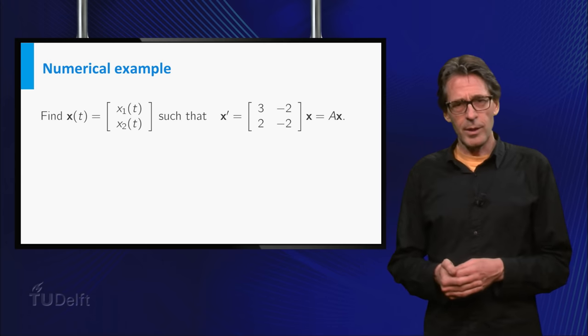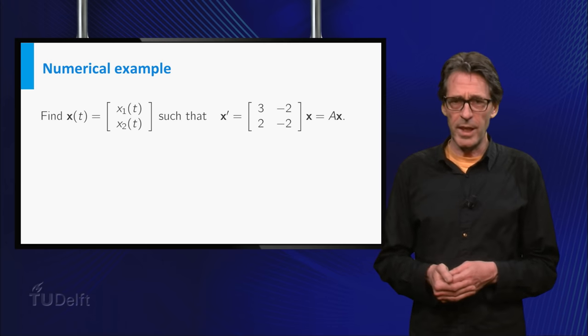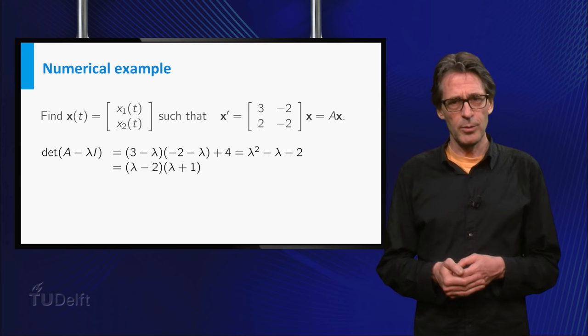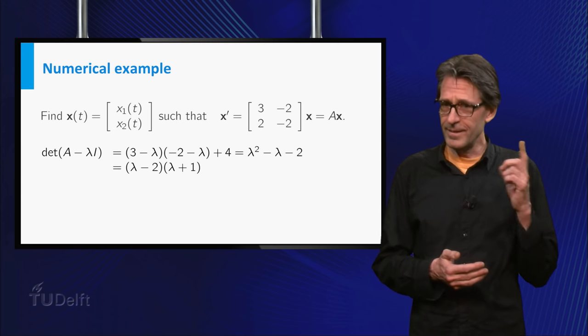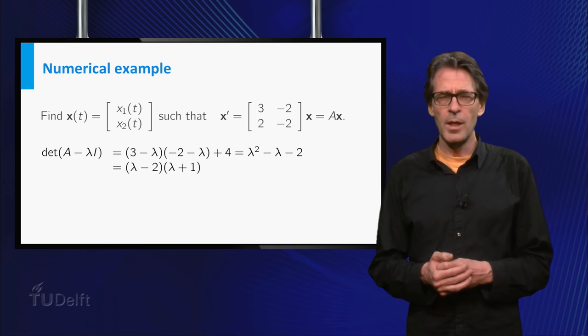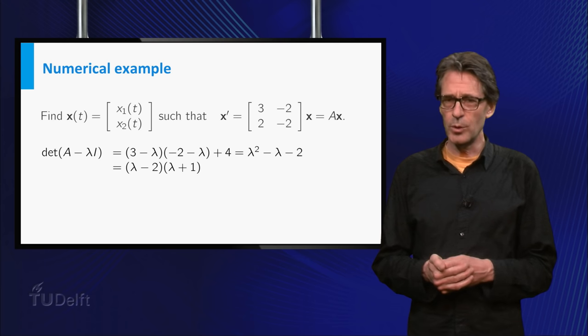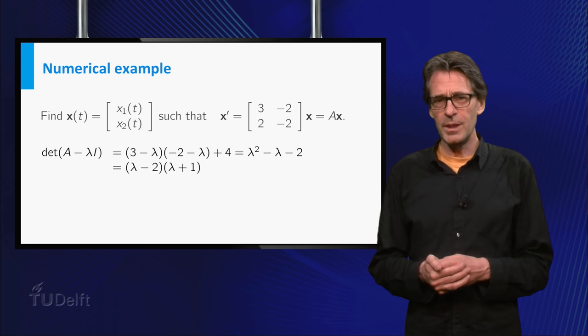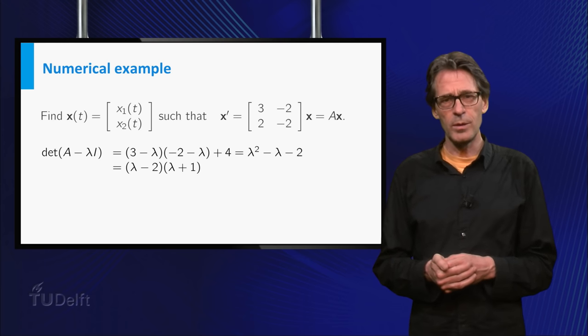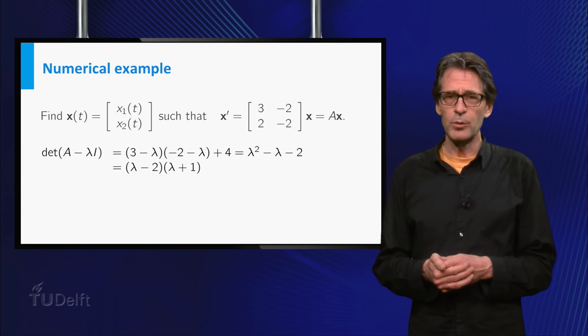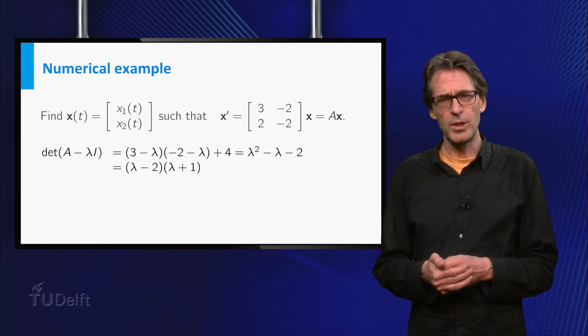Let's apply it to the numerical example. For the matrix A, the eigenvalues are the zeros of the characteristic polynomial. Characteristic A, there is that word again. So λ squared minus λ minus 2 should equal zero. We see that the eigenvalues are λ₁ equals 2 and λ₂ equals minus 1. You should be able to find the corresponding eigenvectors yourself.